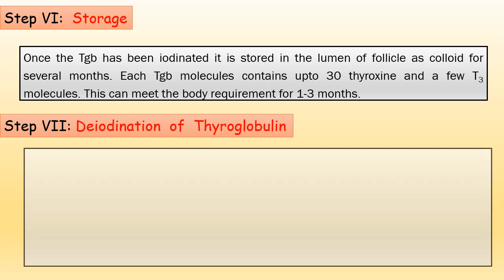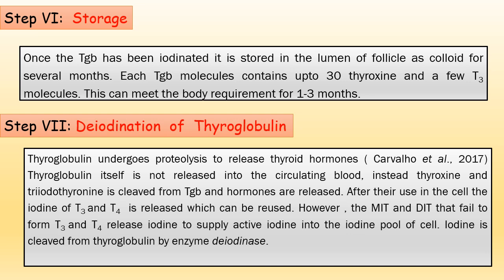The next step is deiodination of thyroglobulin. Thyroglobulin undergoes proteolysis to release the thyroid hormone. Thyroglobulin itself will not go out of the follicle or to the blood; instead, the hormones produced within the thyroglobulin will be cleaved from the thyroglobulin molecule and released to the blood. After use in the cell, the iodine of T3 and T4 is released and can be reused. The MIT and DIT that fail to form T3 and T4 release iodine to supply active iodine into the iodine pool of the cell. The iodine is cleaved from thyroglobulin by the enzyme deiodinase.